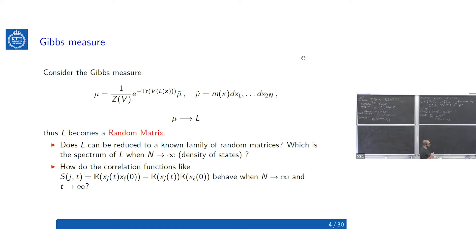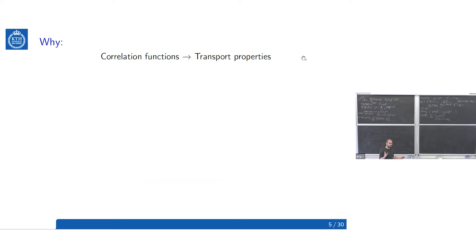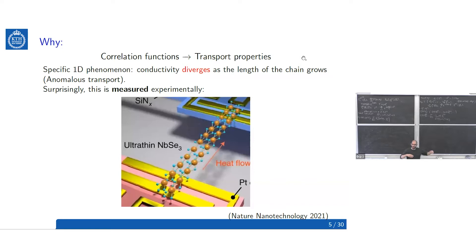Why are we interested in these correlation functions? Because they encode transport properties of the system. In 1D there is this phenomenon called anomalous transport, for which the conductivity diverges as the length of the chain goes to infinity. Strikingly, this has actually been measured — here is a picture from Nature Nanotechnology in 2021 where they used really thin nanotubes and observed that conductivity diverges as the chain length grows. So it's a 1D phenomenon but it actually happens in real life.